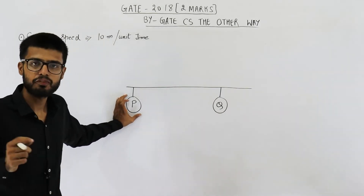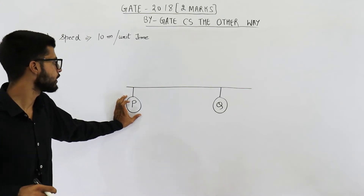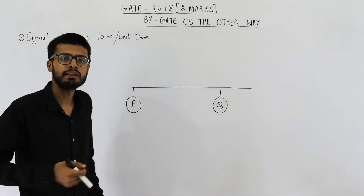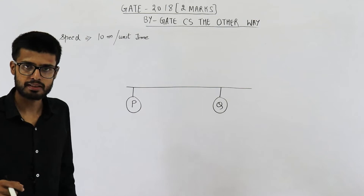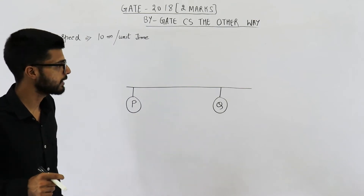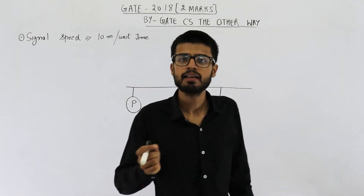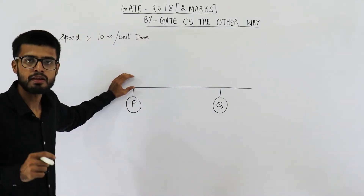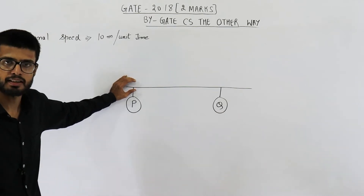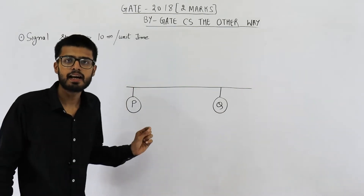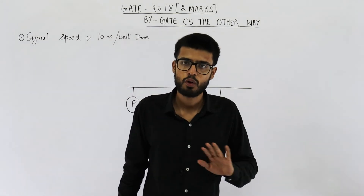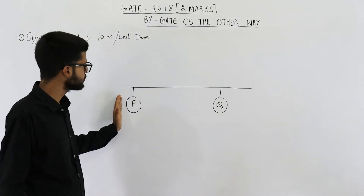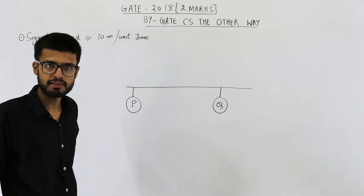For example, if P wants to send some data, P will sense the channel for five time units, and at the beginning of the next time unit — the sixth — P will start sending data. Once any station starts sending data, it will send continuously for 20 time units, and during those 20 time units it will not sense the channel. So once P has started sending, it will stop sensing.